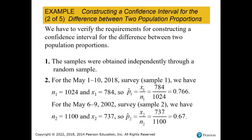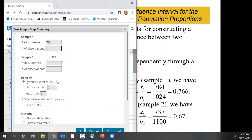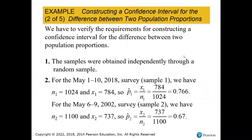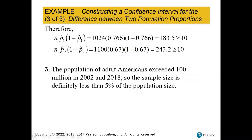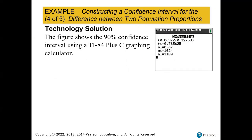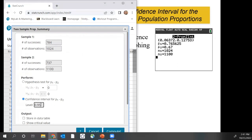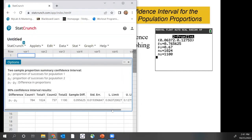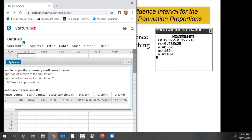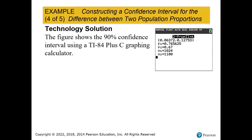In StatCrunch: Stat → Proportion Stats → Two Samples → Summary. We enter 784 out of 1,024 and 737 out of 1,100. Instead of a hypothesis test, we are doing a confidence interval at 90%, so we set the confidence level to 0.90 and click Compute. Our interval is 0.06372 to 0.12753.